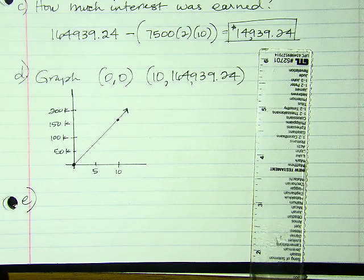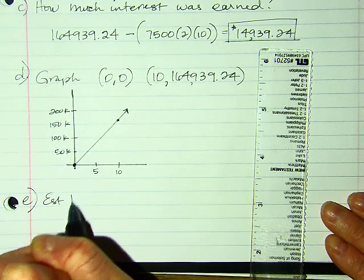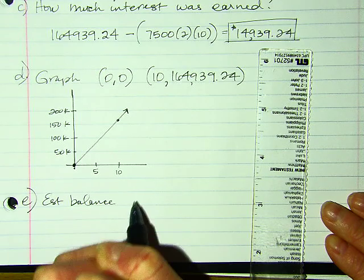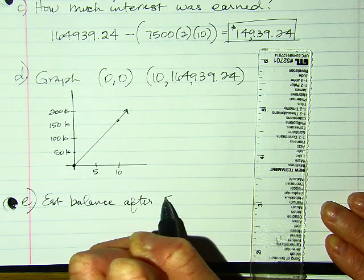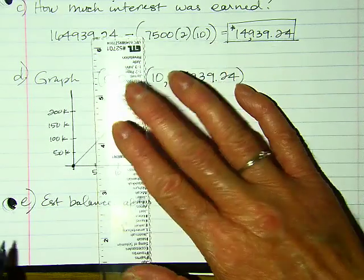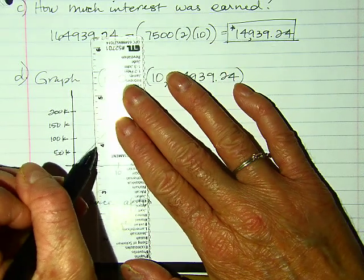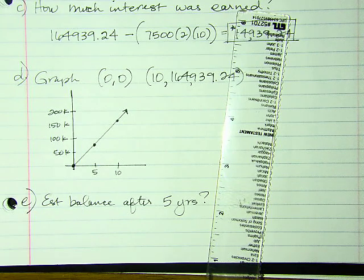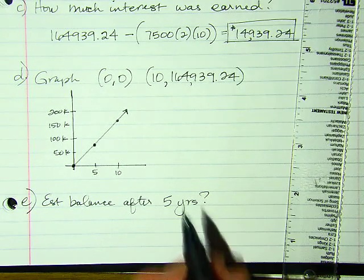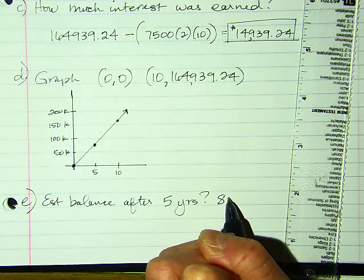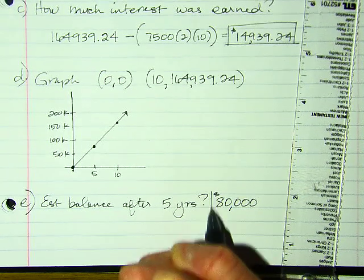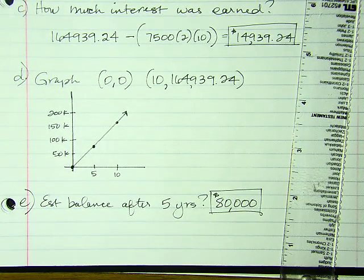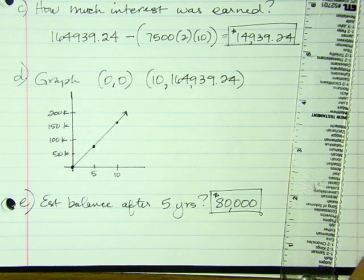Part E: estimate the balance after 5 years. I'll use my ruler to line it up at 5 years and hit right there. This would be 75,000 — that looks a little bit more, so I'm going to guess around $80,000. If you put 78,000, 79,000, or 75,000 — somewhere near $80,000 — that's fine. And that concludes the lesson.